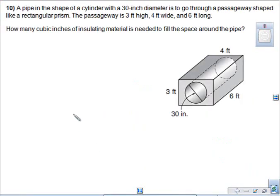This one gives you a pipe in the shape of a cylinder with a 30-inch diameter is to go through a passageway shaped like a rectangular prism. The passageway is 3 feet high, 4 feet wide, 6 feet long. How many cubic inches of insulating material are needed to fill the space around the pipe? So we want to know what's left. This is one of our composite volume questions where we're subtracting. So we need the volume of the prism, which is area of the base times the height, and we need the volume of the cylinder, which is area of the base, in this case it's a circle, so πr² times height.